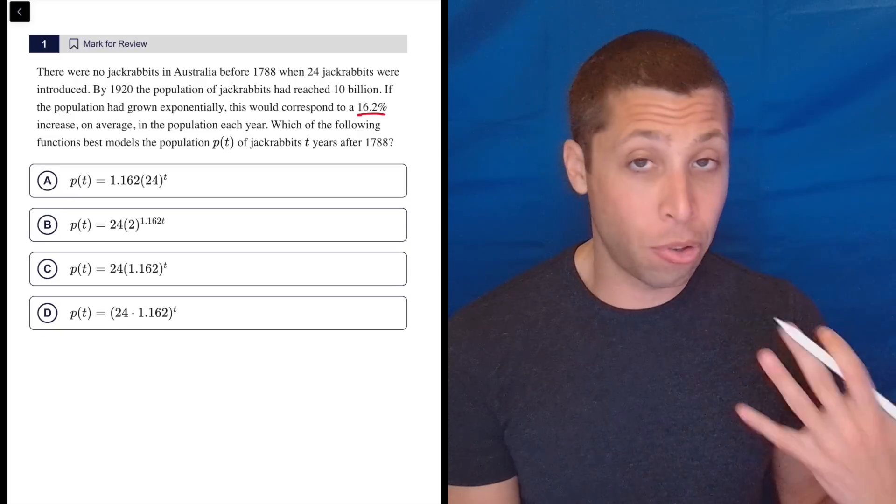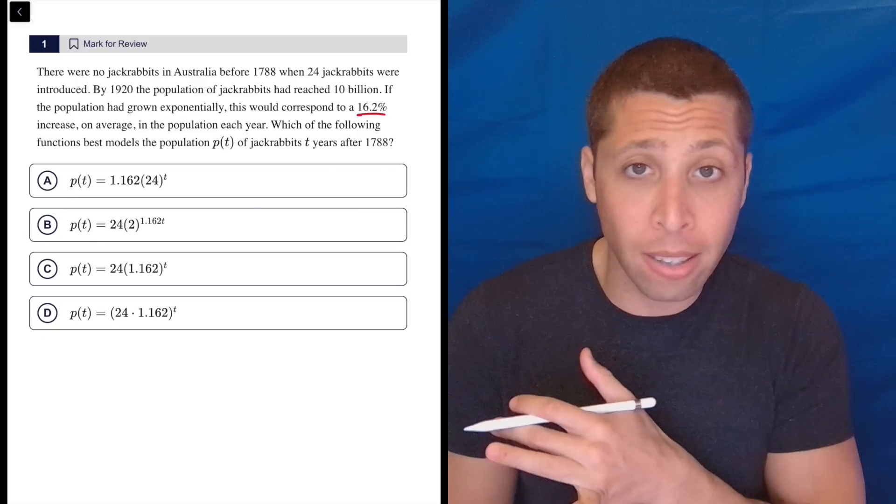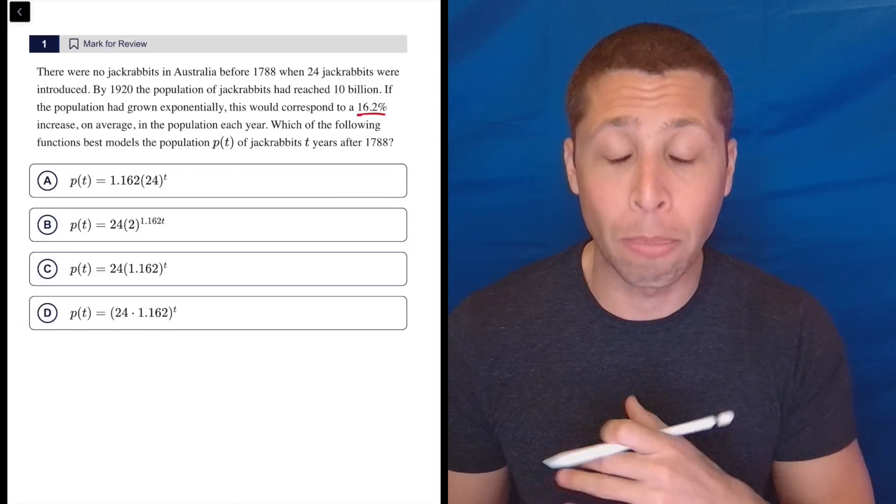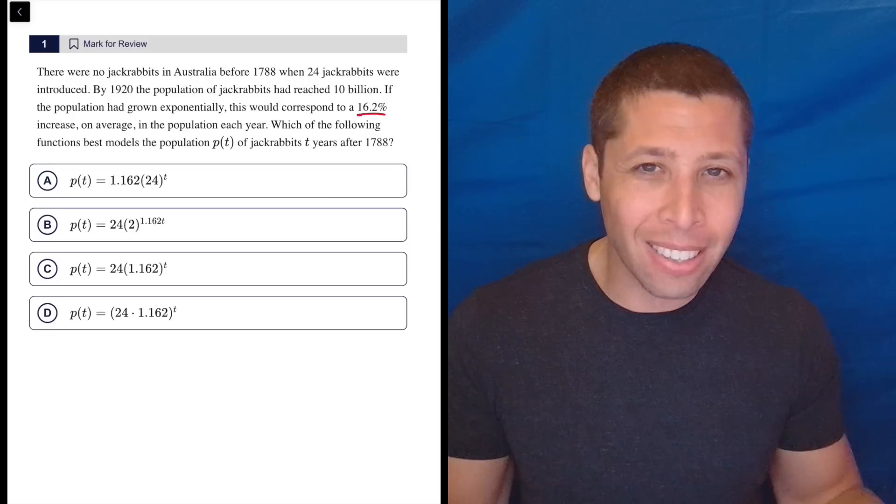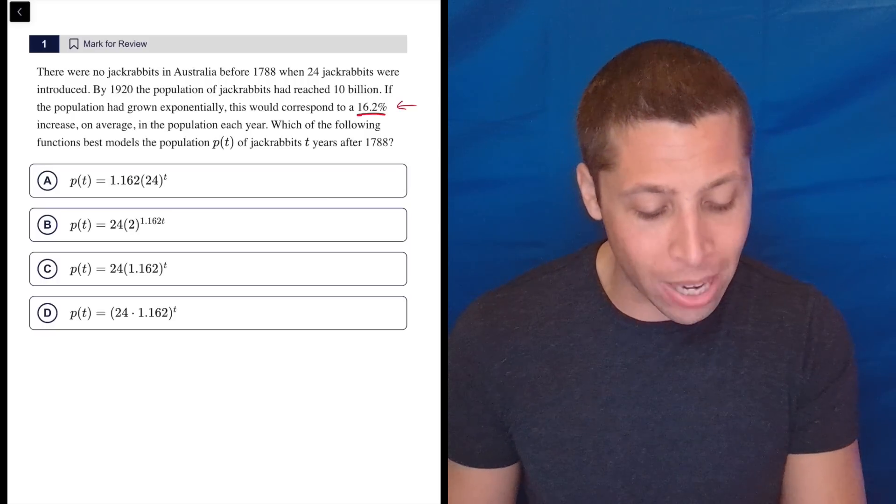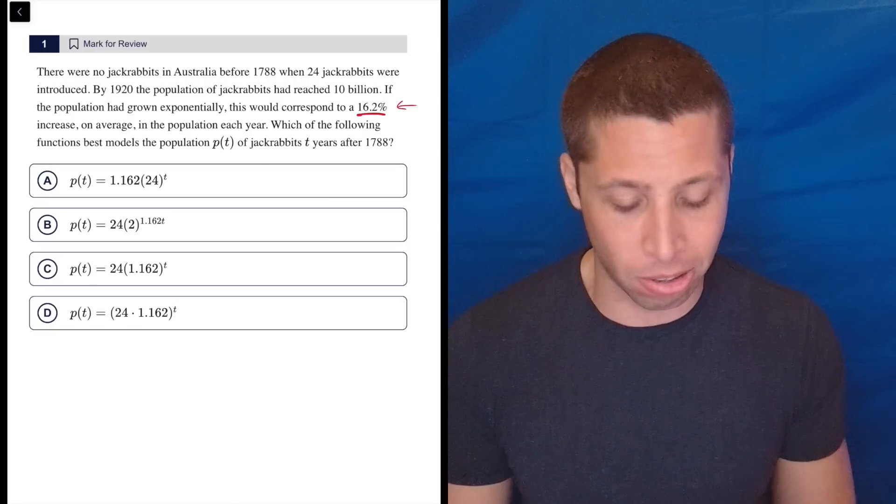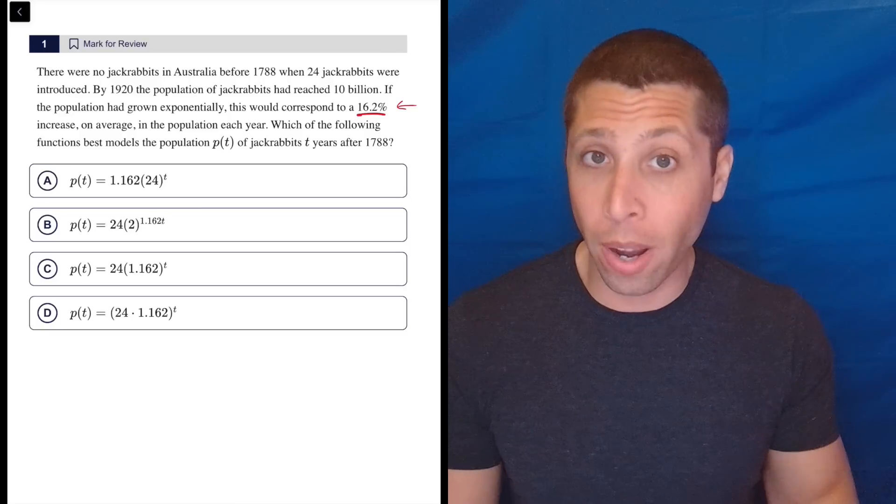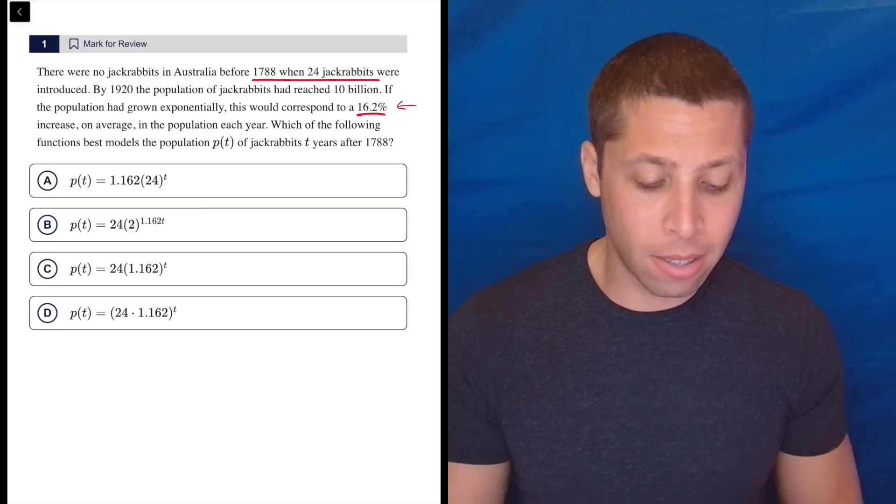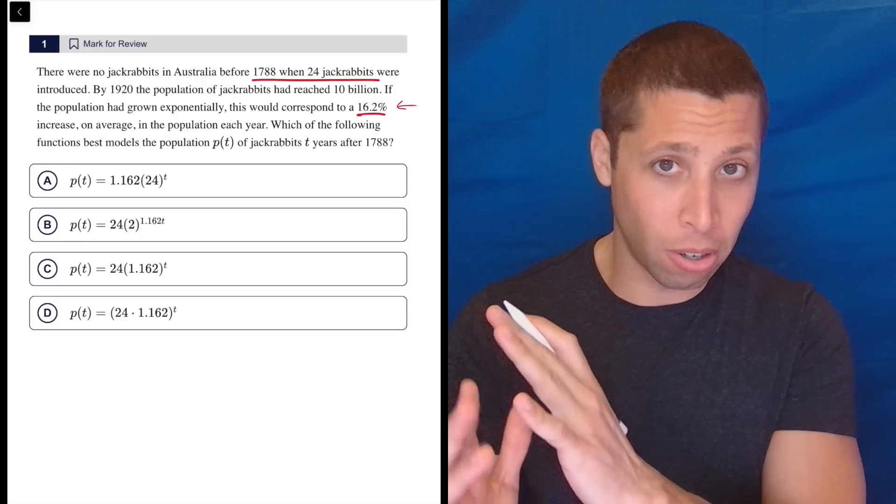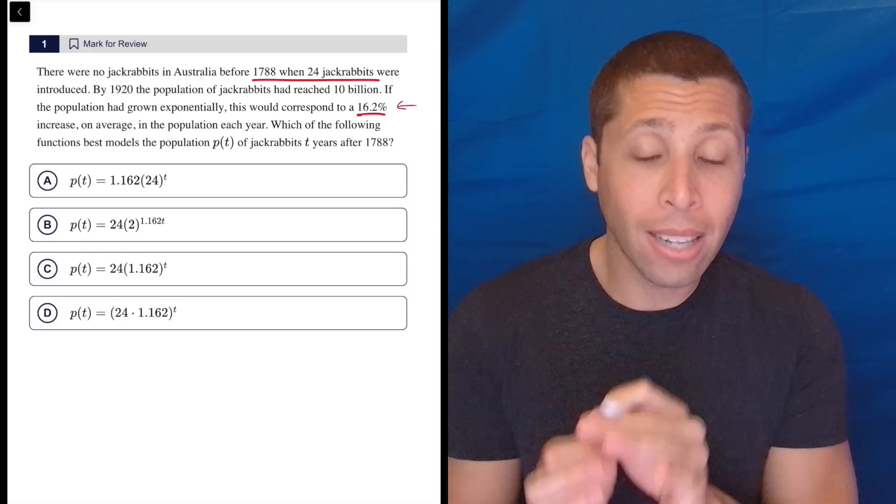Just like with most kinds of equations, like lines, we have a slope and a y-intercept. With exponentials, we have a y-intercept, and then it's not technically a slope, but that increase rate is kind of behaving like a slope. So let's start with the y-intercept, because that's usually the easiest thing. That's the zero point. Since 1788 is kind of like our year zero and there are 24, that's our starting point.